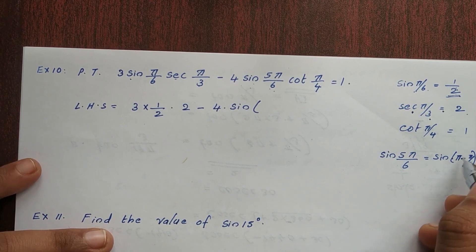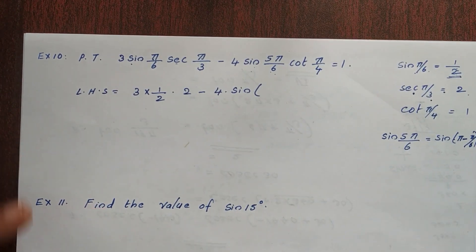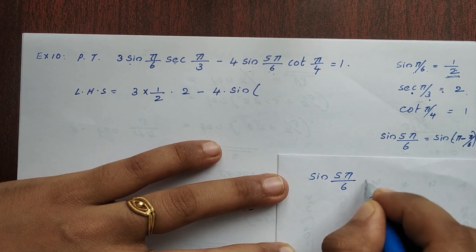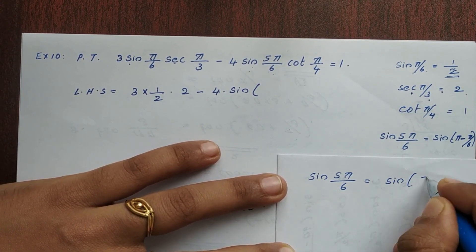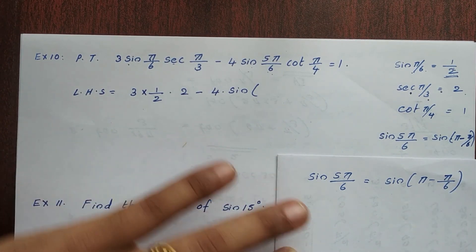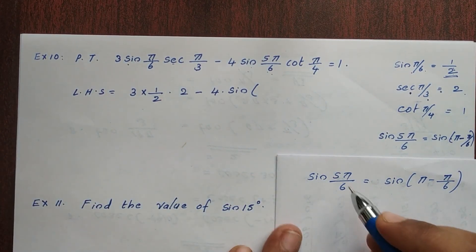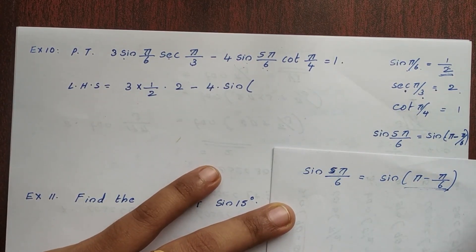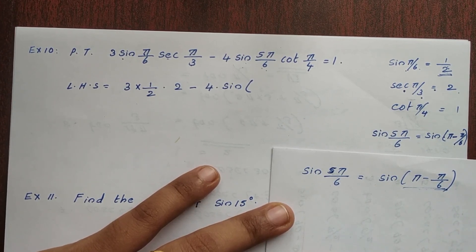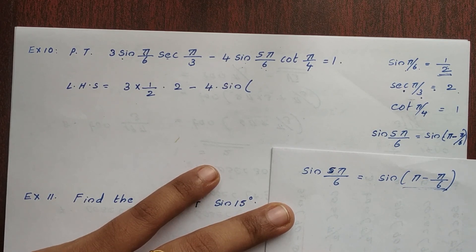Let's work out sin(5π/6). We can write it as sin(π − π/6). Now, π minus π/6 equals (6π − π)/6, that is 5π/6. So sin(5π/6) = sin(π − π/6), which is the same value.